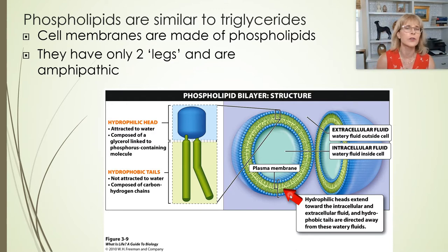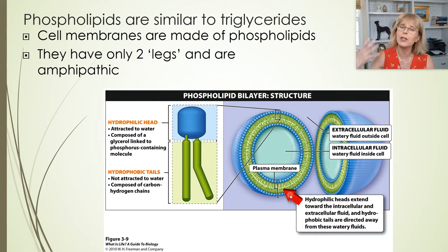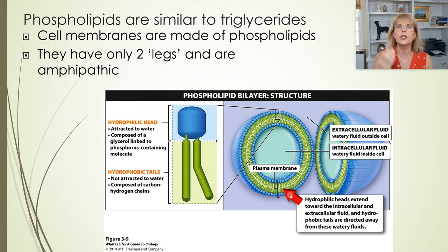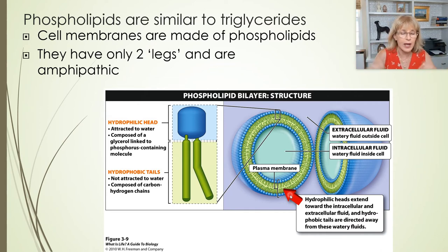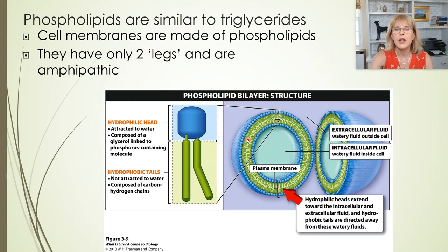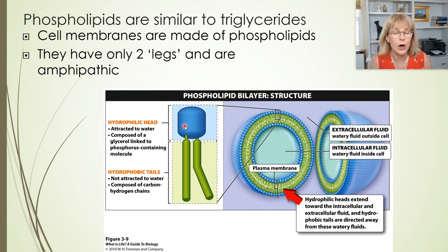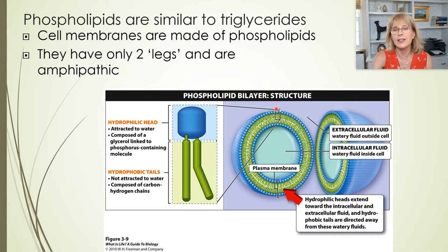If you add a nickel for every time I say phospholipid bilayer in this class, you'd have probably 20 bucks — I'm going to say it a lot. Is it complicated? Frankly, it's not. You know that fat wants to separate from water. The phospholipid is just a little tweak of that concept: the fat part wants to get away from water, and the hydrophilic head wants to be near water. How can this molecule make both sides of itself happy? It arranges itself in this bilayer arrangement.